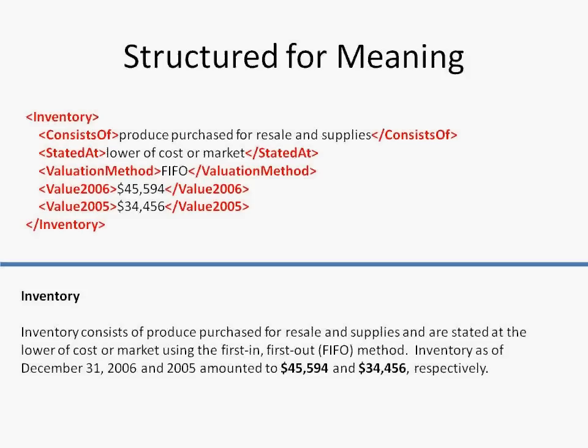Another way to structure information is to structure it for meaning. So here we have a bunch of tags, and these tags have things like inventory, consists of, stated at, valuation method, value for 2006, value for 2005. What we have done is basically taken that large chunk of text and broken out the information into these discrete values. Now, a computer can still render the information exactly like the first presentation we saw. You can see that below — the tags are on top and the rendering is below.